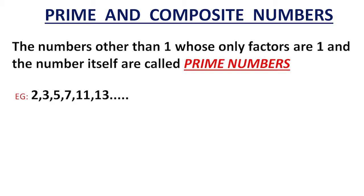So prime numbers have only 2 factors: 1 and the number itself. 2, 3, 5, 7, 11, 13, etc. are prime numbers because they have only 2 factors — 1 and that number.